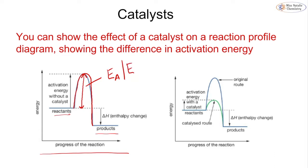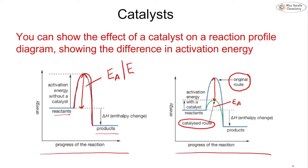When we add a catalyst we get a second curve. The blue curve is our original route and the green curve is our catalyzed route, and you can see there is quite a large difference in activation energy. The activation energy for the green route is much lower than the original, providing an alternative pathway that makes it more likely the reaction will occur at a faster rate.